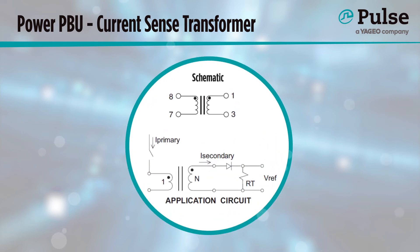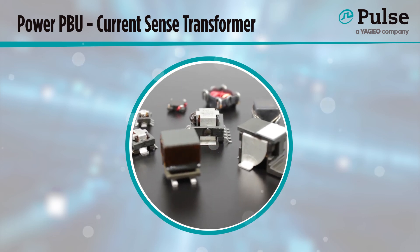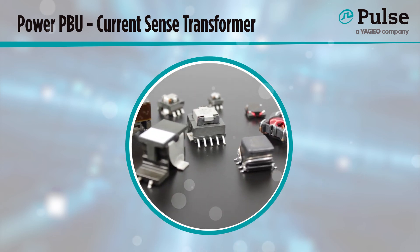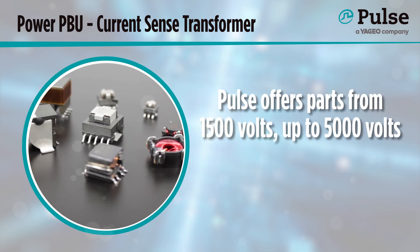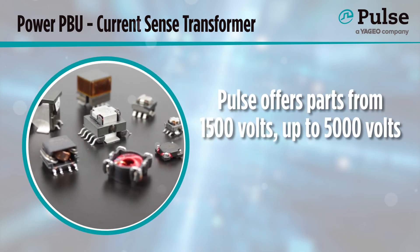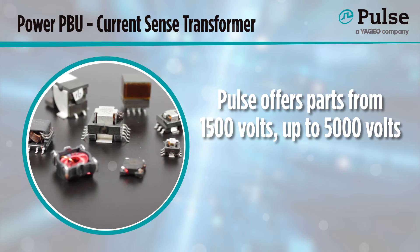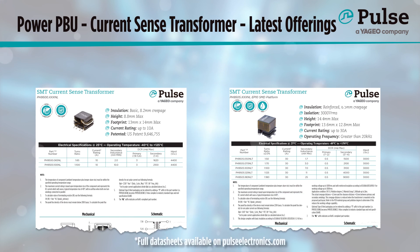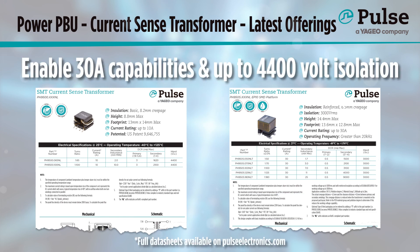Current sense magnetics are used as an extremely low-loss method for sensing currents within a circuit. This is required in many applications for circuit control and also for safety isolation. Like isolation transformers, Pulse offers parts from 1500 volt isolation up to 5000 volts with functional, basic, and reinforced insulation. Our latest catalog offerings enable 30 amp capability and up to 4400 volt isolation within a surface mount platform.